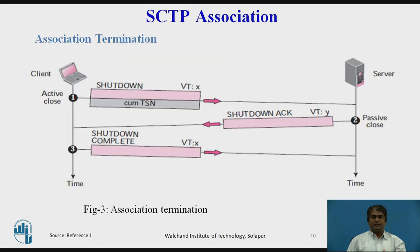Association Termination: In SCTP, like TCP, either of the two parties — client or server — can close the connection. However, SCTP does not allow a half-close association. If one end closes the association, the other end must stop sending new data. If any data are left in the queue upon receipt of the termination request, they are sent and then the association is closed.